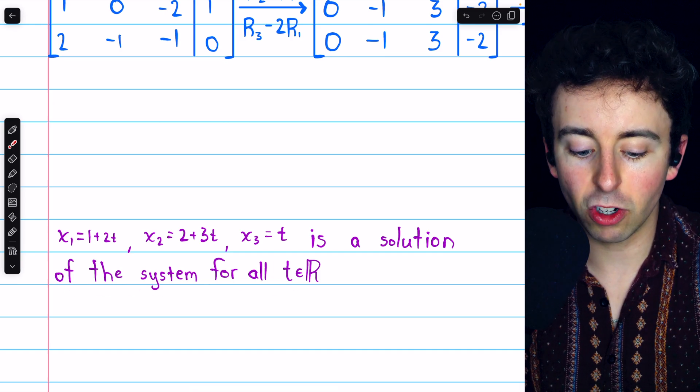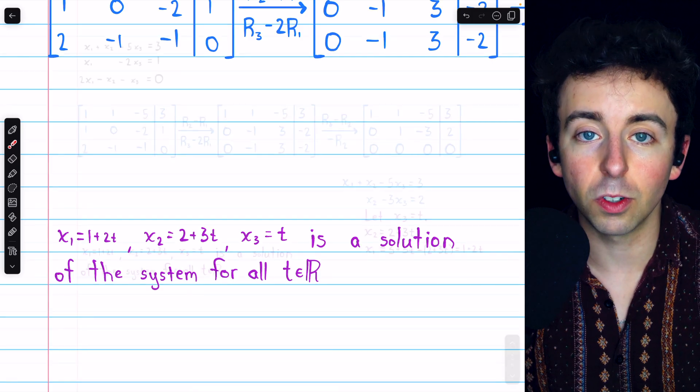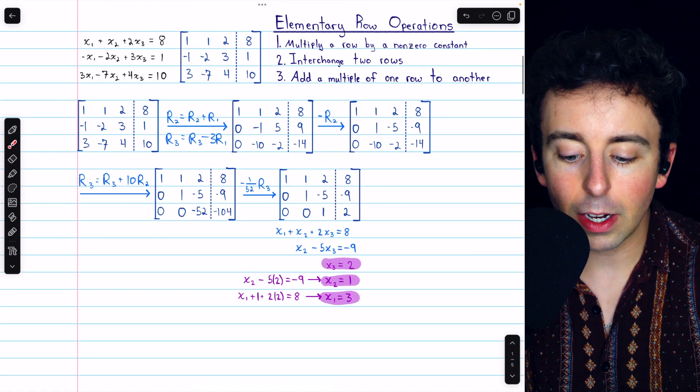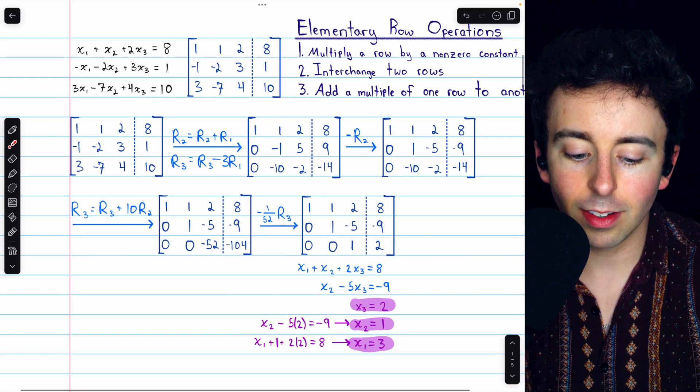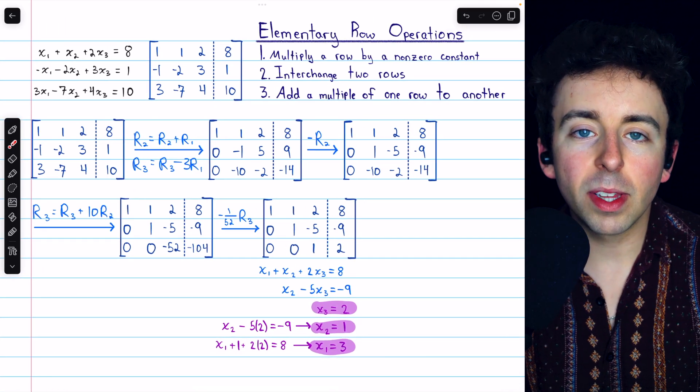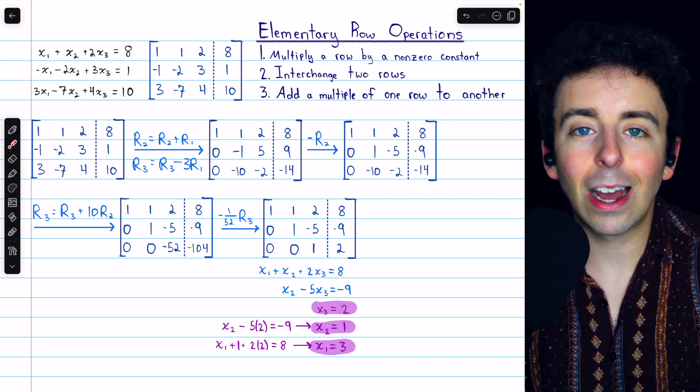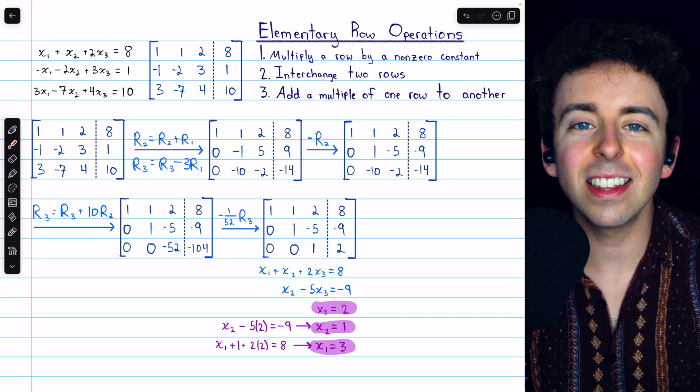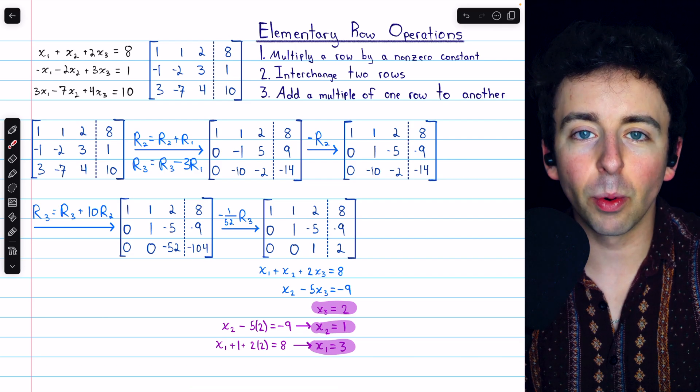Any real number t can be chosen, and you can get another solution. So, that's how to solve systems of linear equations using augmented matrices, elementary row operations, and back substitution. Let me know in the comments if you have any questions, and be sure to check out my linear algebra course and linear algebra exercises playlists in the description for more. Thanks for watching.